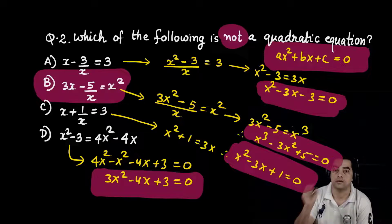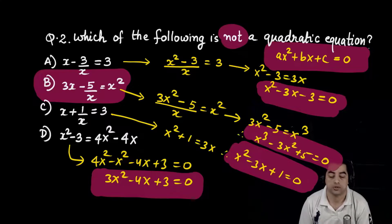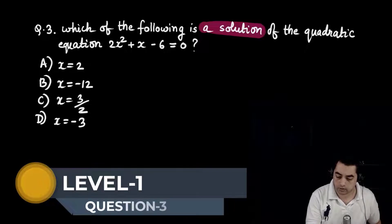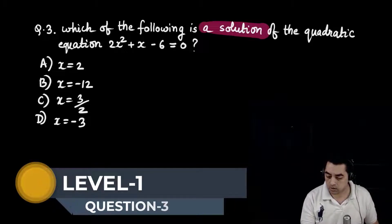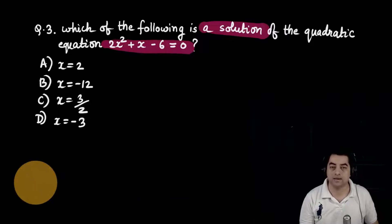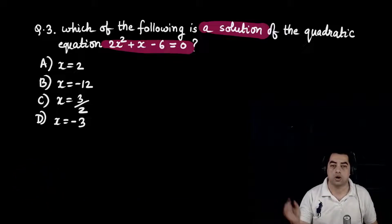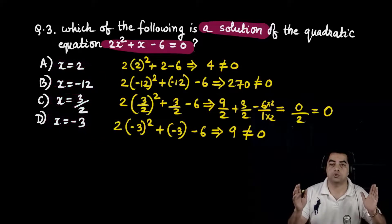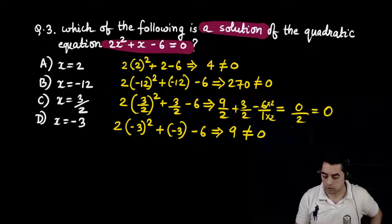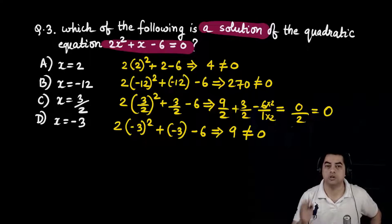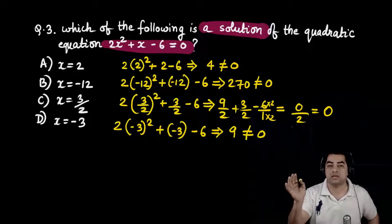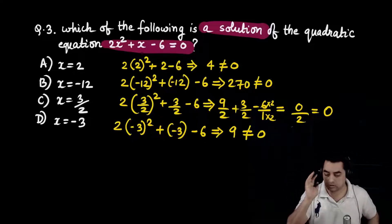Question number 3: which one of the following is a solution of the quadratic equation 2x² + x - 6 = 0? Options: x = 2, x = -12, x = 3/2, x = -3. Solution means if we substitute that value into the equation, LHS will equal RHS.